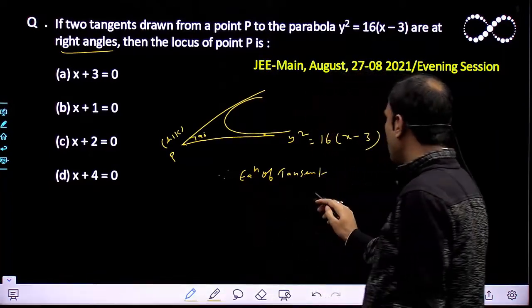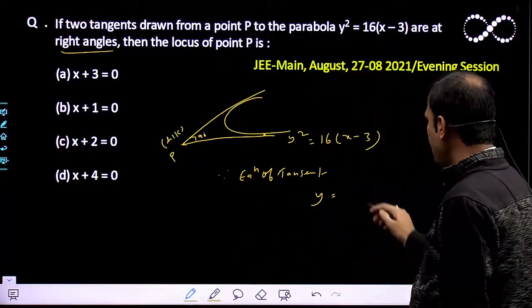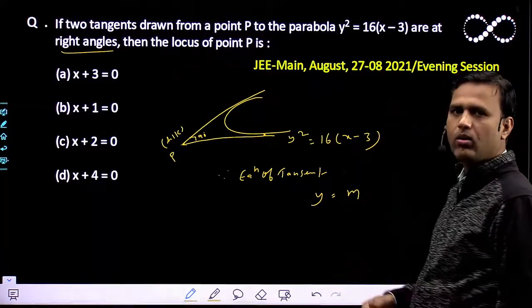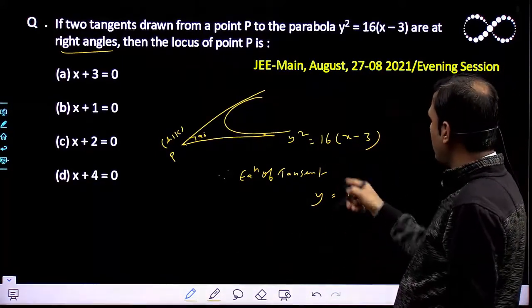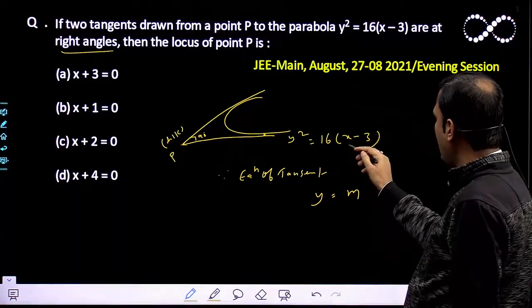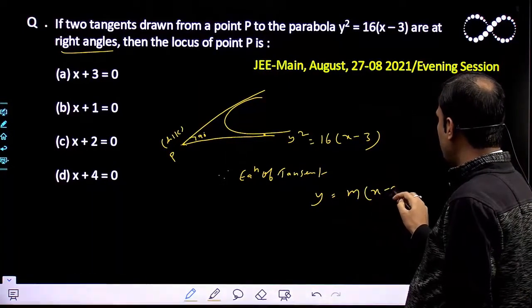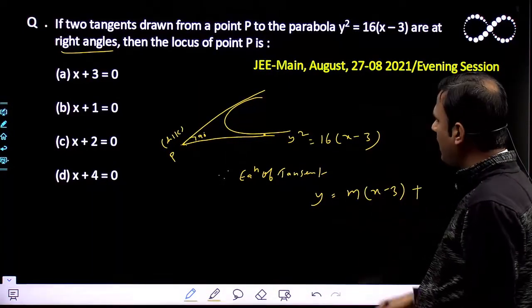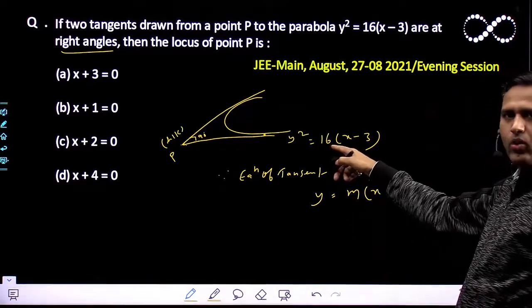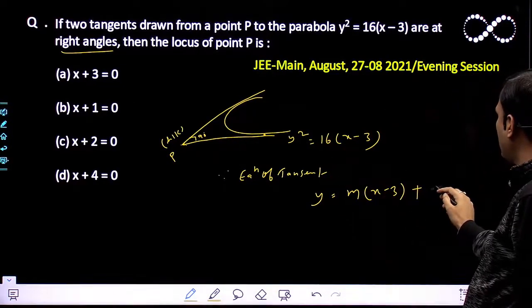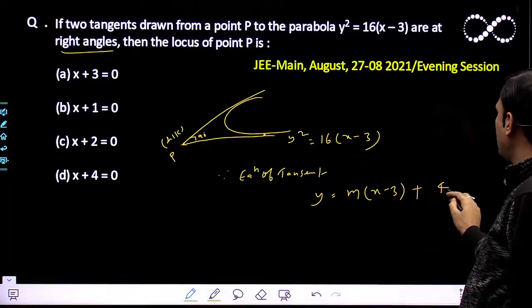Equation of tangent: y = mx + a/m. For the local tangent, y = m(x - 3) + a/m, where a = 4 (since 4a = 16, so a = 4). This becomes 4/m.